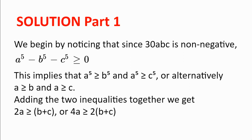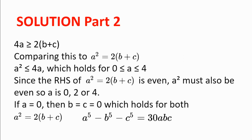If we add the two inequalities together, we get 2a is greater or equal to b plus c, or 4a is greater or equal to 2 multiplied by b plus c. If we compare this to a squared is equal to 2 multiplied by b plus c, we see that a squared is less than or equal to 4a. And since a is non-negative, 0 is less than or equal to a, which is less than or equal to 4. And since a is an integer, a is 0, 1, 2, 3, or 4.